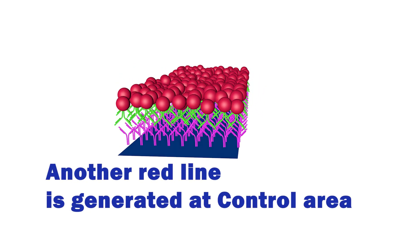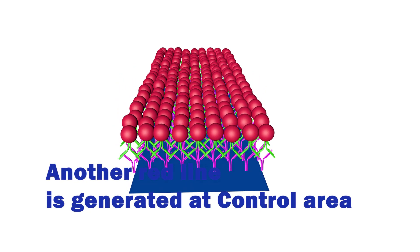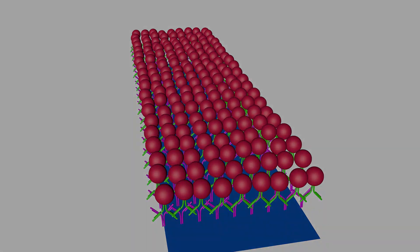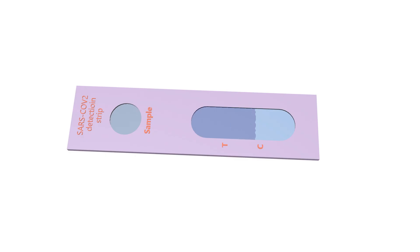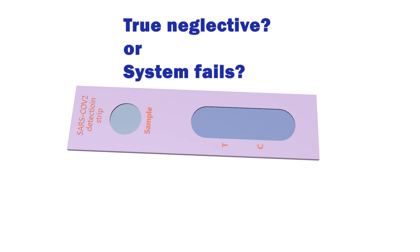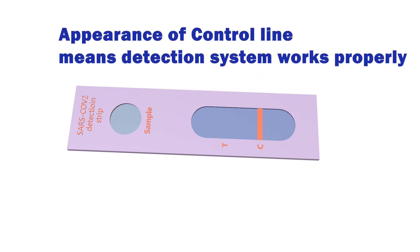The second red line is important for quality control. Its appearance means that the system is working properly. For example, suppose we have a negative result in the test area. Is this a true negative result, or just something wrong with the test system? If we see the second red line, we know that this is a true test. Thanks for watching.